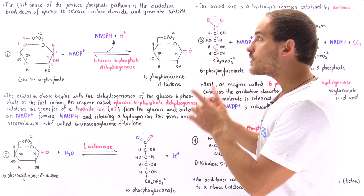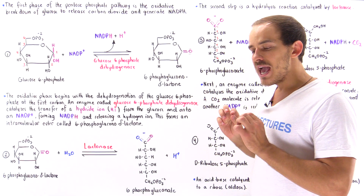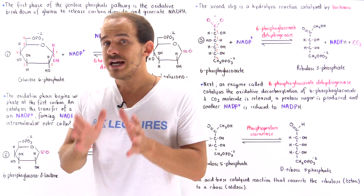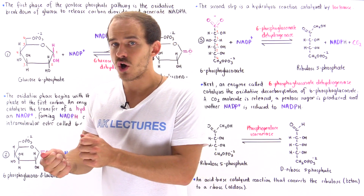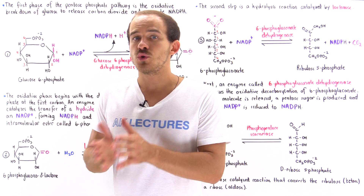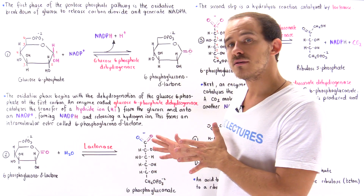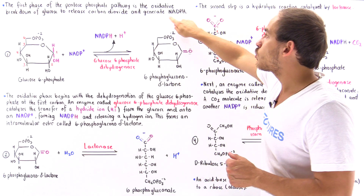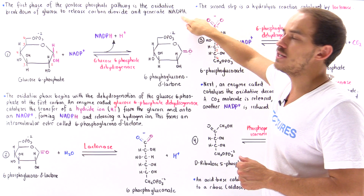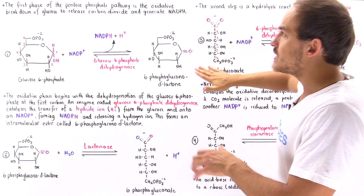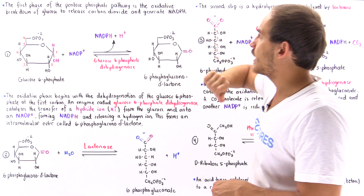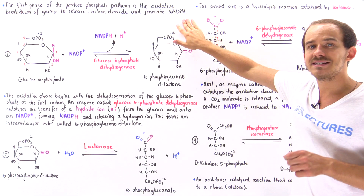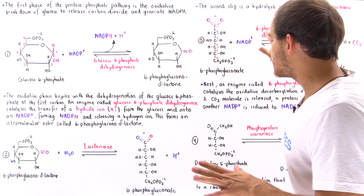In this lecture, I'd like to focus on the first phase of the pentose phosphate pathway — the oxidative phase. This is where we actually oxidize glucose, transform it into a pentose molecule, release carbon dioxide, and generate the much-needed reducing agent molecules, the NADPH molecules. So the first phase is the oxidative breakdown of glucose to release carbon dioxide and generate NADPH molecules.